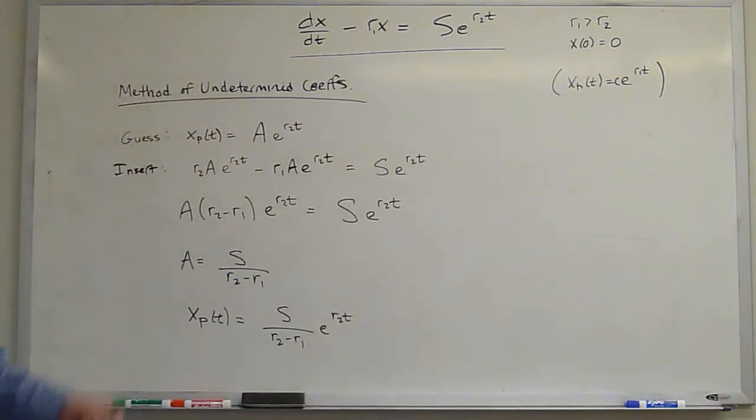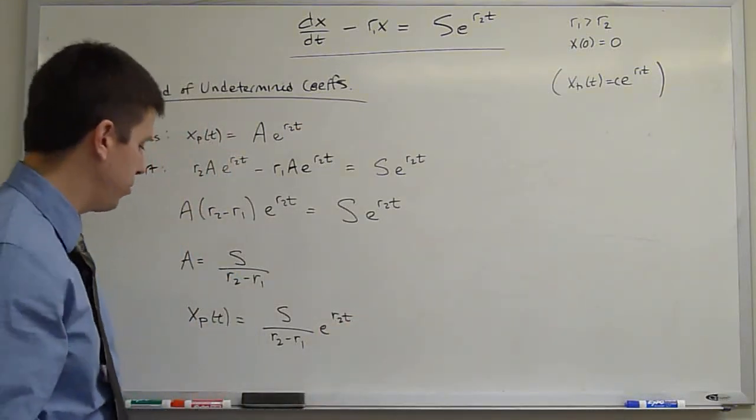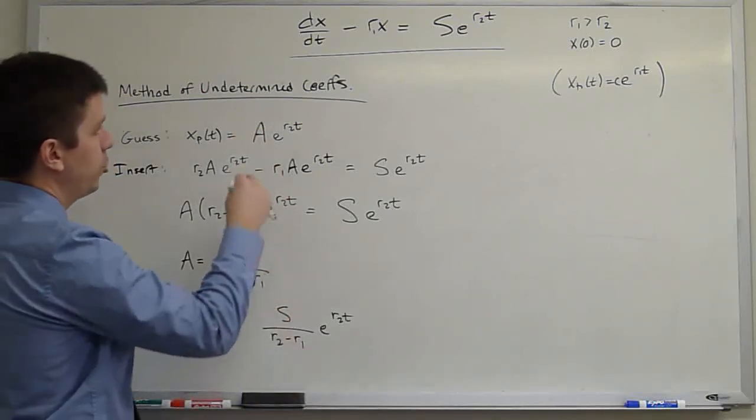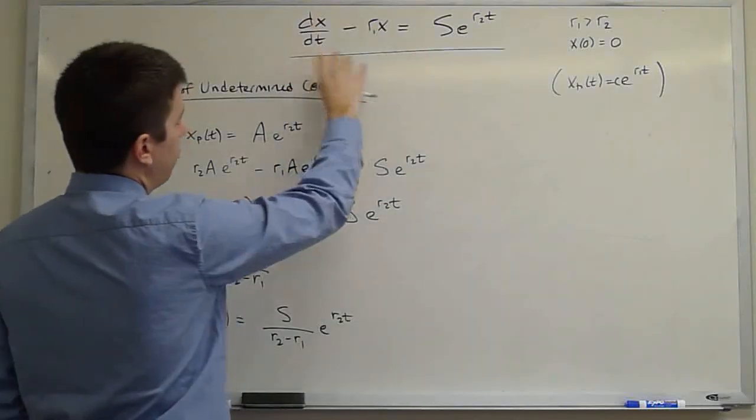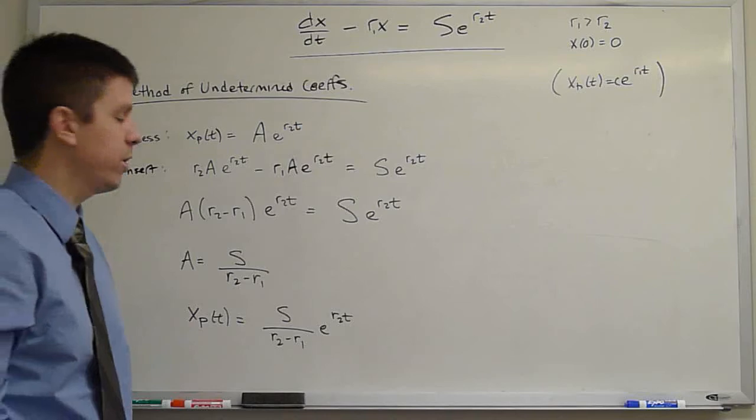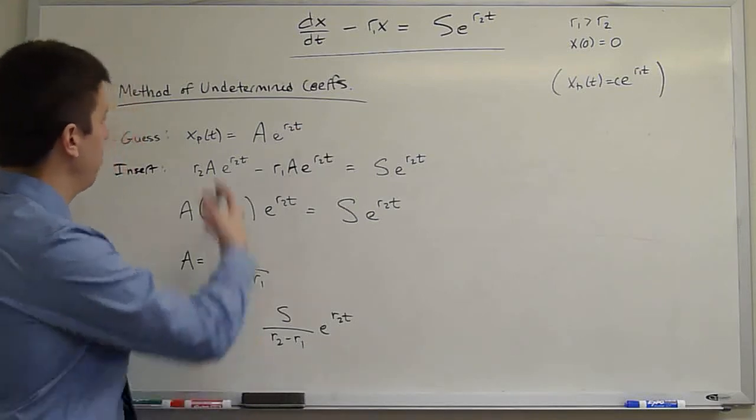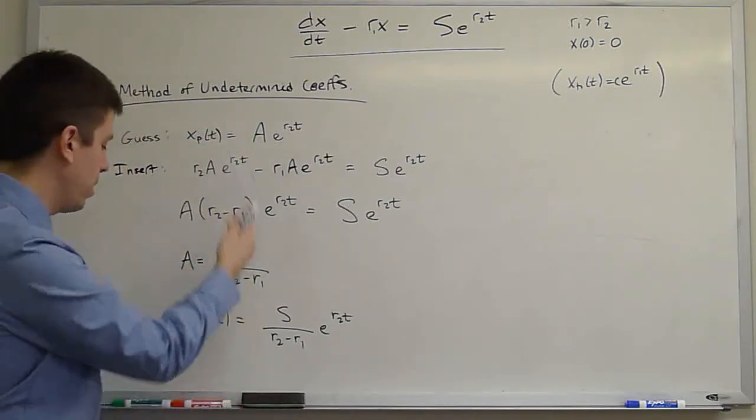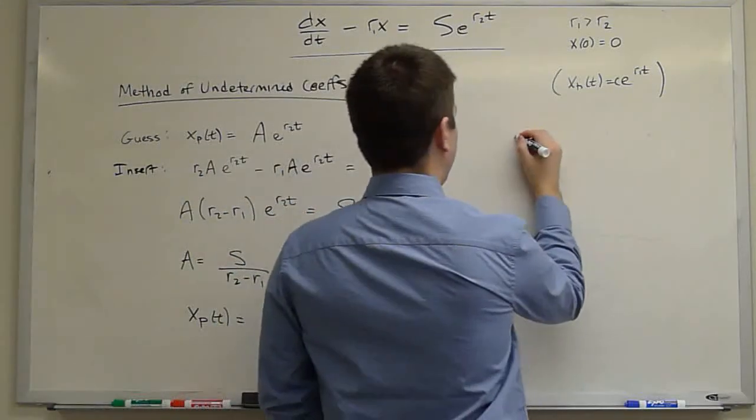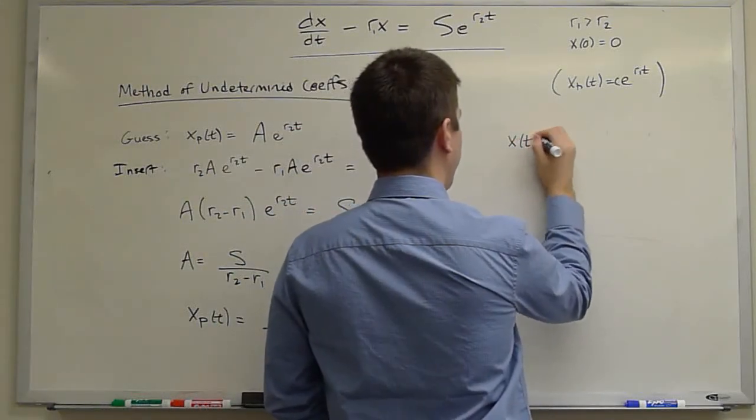This is the same particular solution we found using other methods. So it shouldn't be too surprising that we obtain this. But this was a little bit simpler. We just took an educated guess at the form of the solution, given that this was a linear operator with constant coefficients. That educated guess is called the method of undetermined coefficients. We find the particular solution. We add to it the homogeneous solution to obtain the general solution.